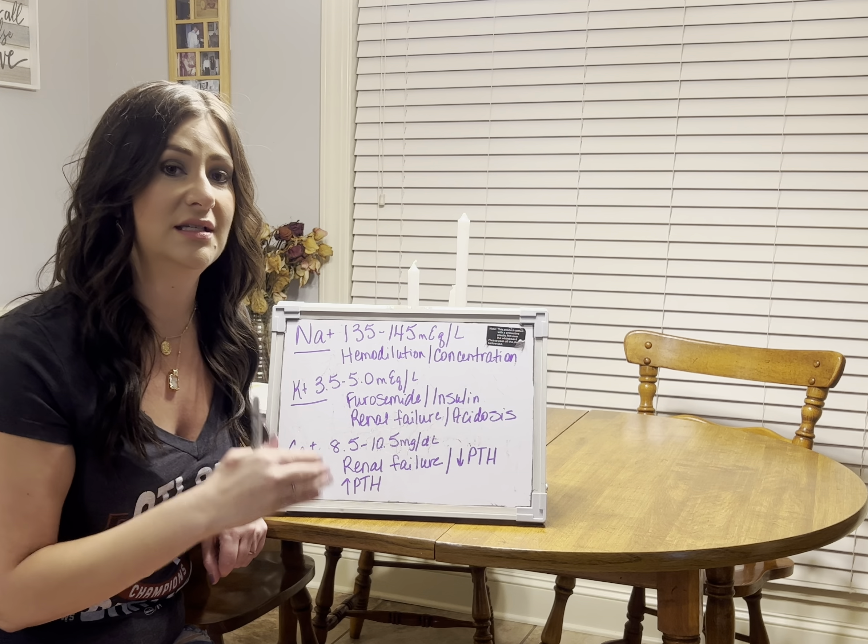Let's start off with sodium. The normal range for sodium is 135 to 145 milliequivalents per liter. Always go with what your program teaches you, but 135 to 145 is easy to remember. Anything below 135 is considered hyponatremia; anything higher than 145 is considered hypernatremia. Hypo is low, hyper is high.